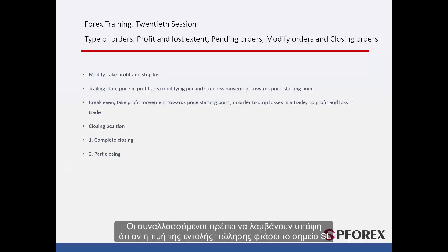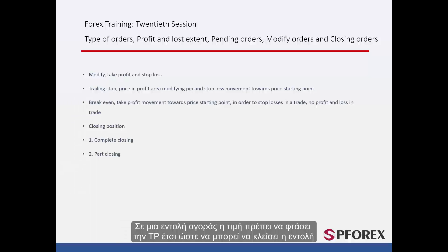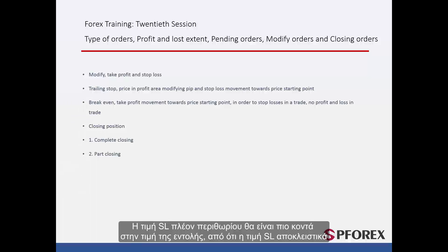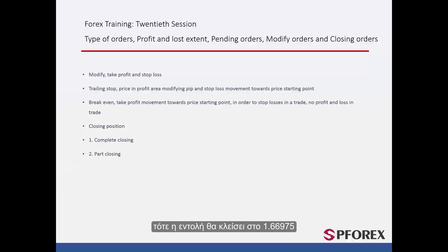Traders should note that in a sell order, if price meets the SL point the order will be closed, while if price reaches TP level, the order will not be closed unless it passes TP plus the amount of spread. In a buy order, price must reach the TP price for the order to be closed. If price moves towards SL, the order will be closed even if it does not reach the SL price exactly, since SL price plus spread is closer to the order price. For example, if the SL price is 1.66955 and the spread on GBP/USD is 2 pips, the order will be closed at 1.66975.